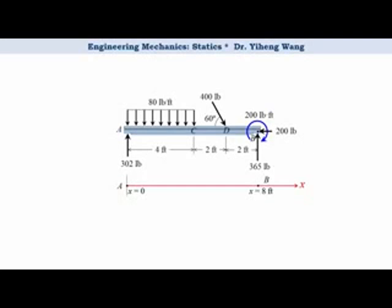Next, we want to section the member. Before doing that, let's take a look at the loadings on the member — you can tell the loadings change. Intuitively, we might be able to tell we cannot use a single shear force function or a single bending moment function to describe the entire member. Since points C and D are where changes happen, for this problem we are going to cut the member three times: section 1 between A and C, section 2 between C and D, and section 3 between D and B. Every time we section the member, we take the entire left segment for analysis, because this way the length of the segment is x as defined by the x-axis.